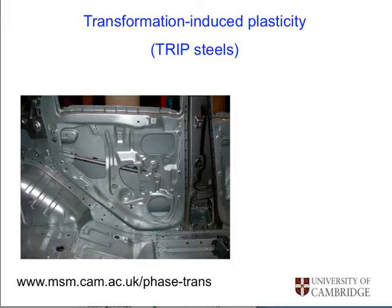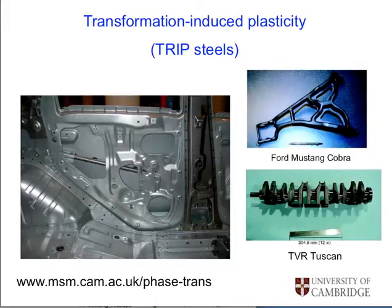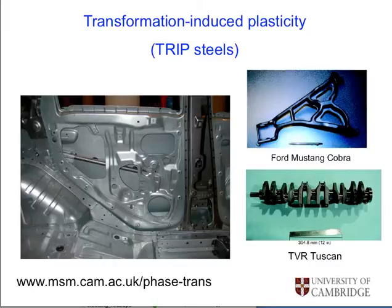That increase would have been even larger had it not been for the sorts of steels I am going to discuss today. And it is not just steels — transformation induced plasticity also features in some of the best cast irons. For example, the top right slide shows a suspension arm made from cast iron. You would imagine that cast iron has very little ductility, but because the structure contains quite a lot of retained austenite, it undergoes transformation induced plasticity, which helps to toughen and strengthen the material. Similarly, this camshaft — both are sports car components — is also made of cast iron containing quite a lot of retained austenite.